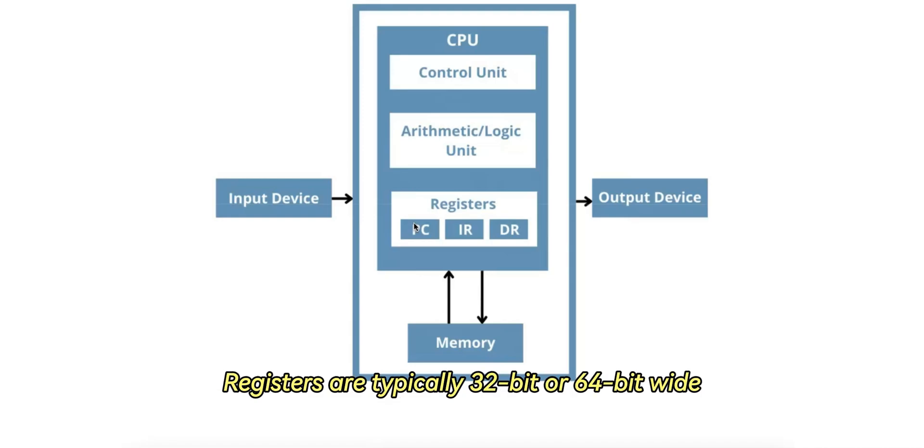Registers are typically 32-bit or 64-bit wide, which means that they can hold data values that are 32 or 64 bits long. For example, a 64-bit register can hold an integer up to 2 to the power of 64 minus 1.